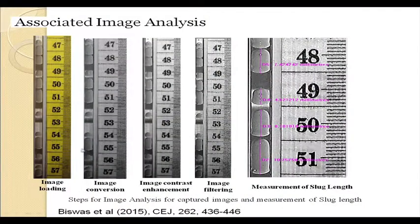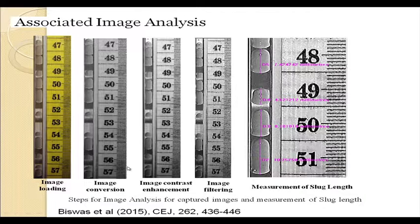The different steps involved in image analysis can use different software, but more or less the same steps are involved. First, load the image in RGB format, then convert it into grayscale mode. Once in grayscale, this enhances the contrast. For further contrast enhancement, subtract the background image from the continuous flow image. A filter should be involved to remove or reduce image noise, and after that calibration is done to determine individual slug parameters: slug length, slug frequency, and slug velocity.